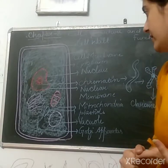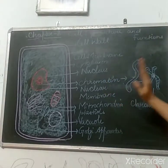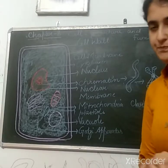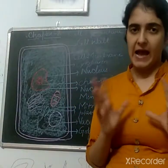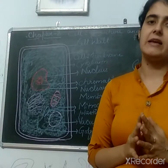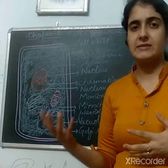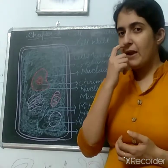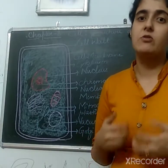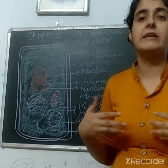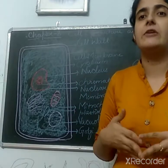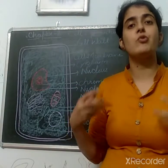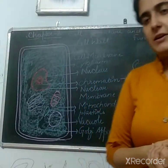The next one is the vacuole. The vacuole is a sack-like structure — larger in plant cells and smaller in animal cells. Plant cells have larger vacuoles because they need to store food, waste, and water. The function of the vacuole is to store food, waste, and water.